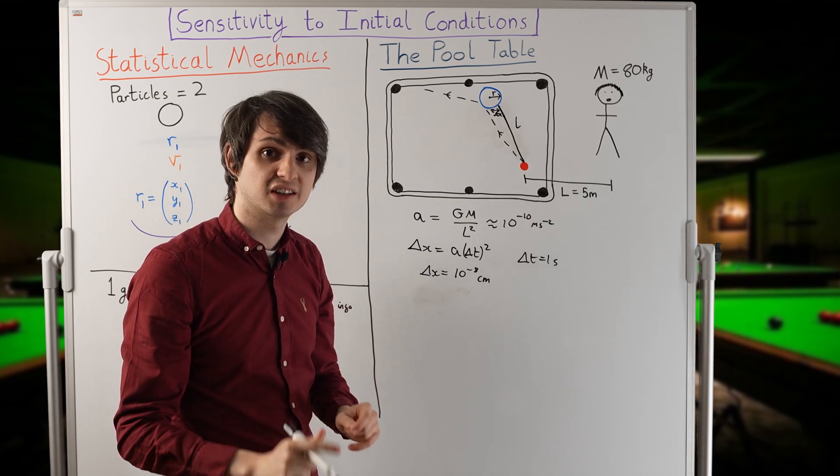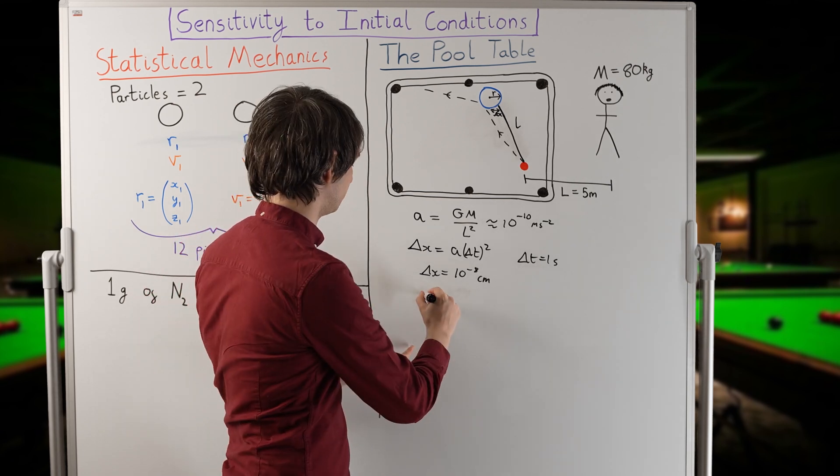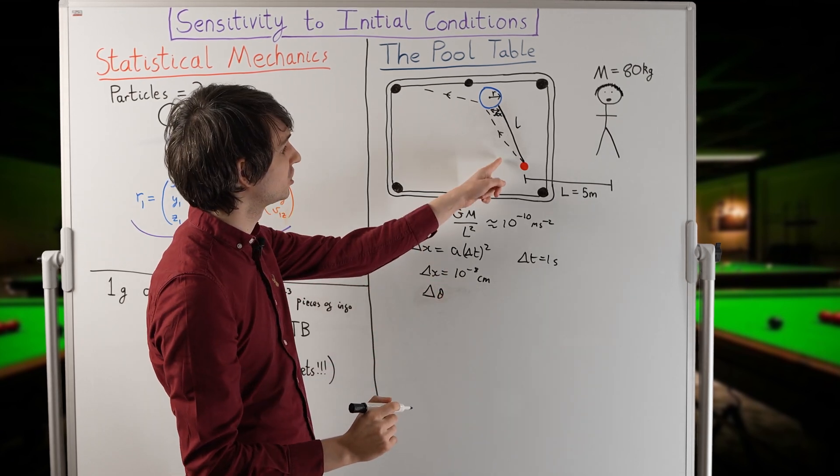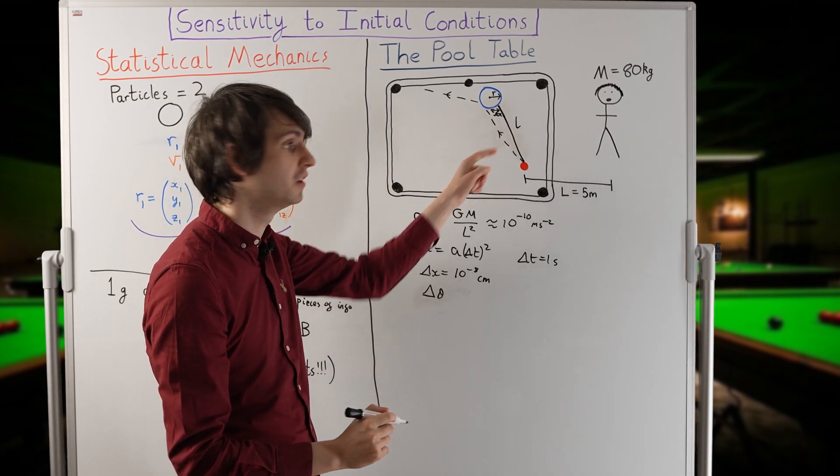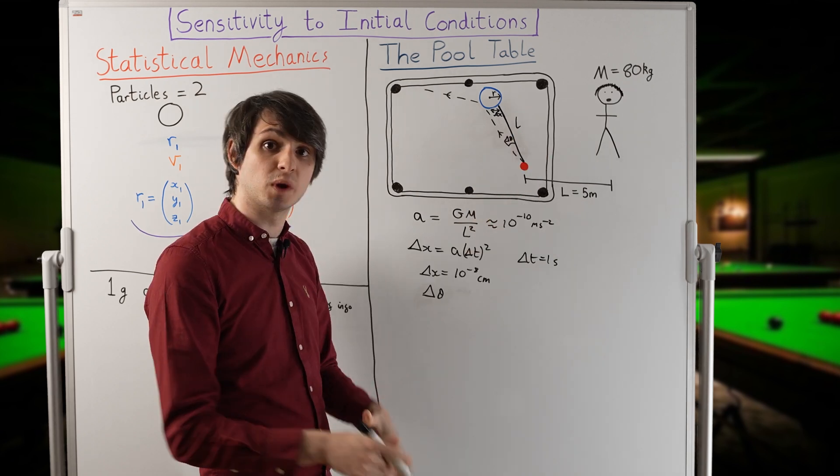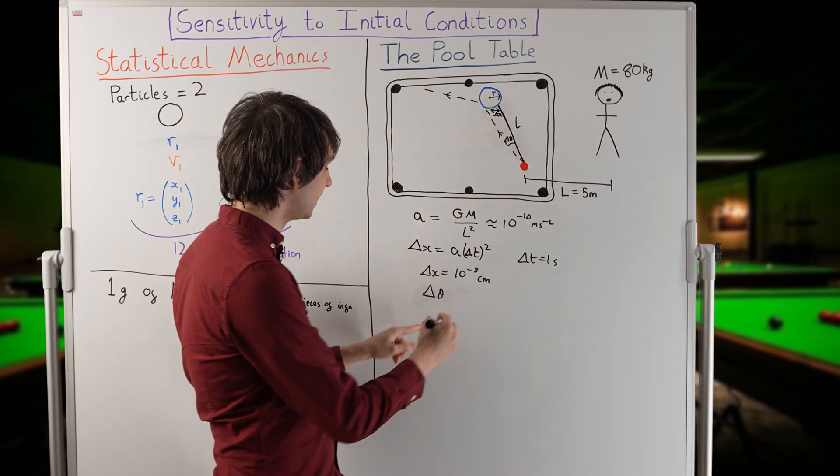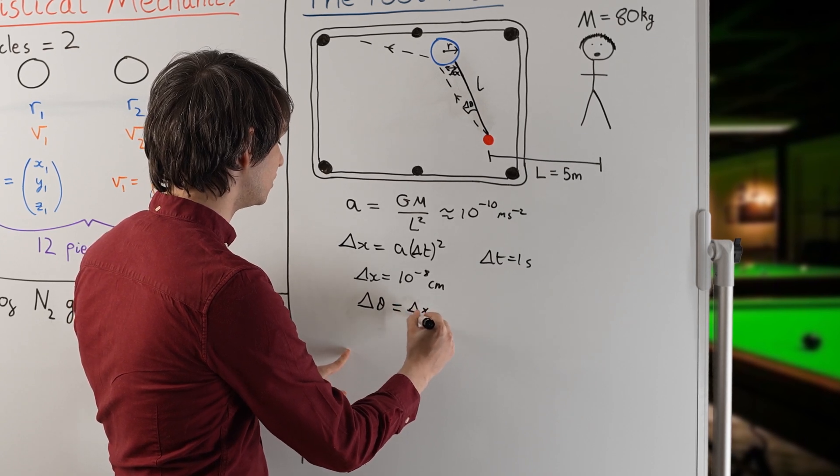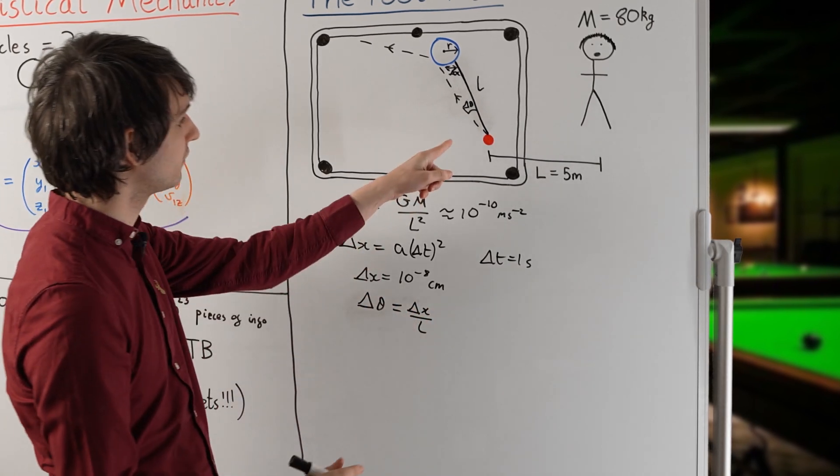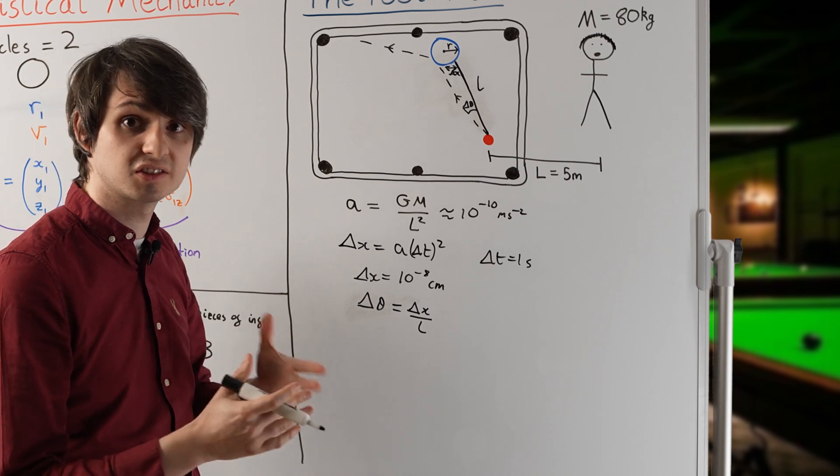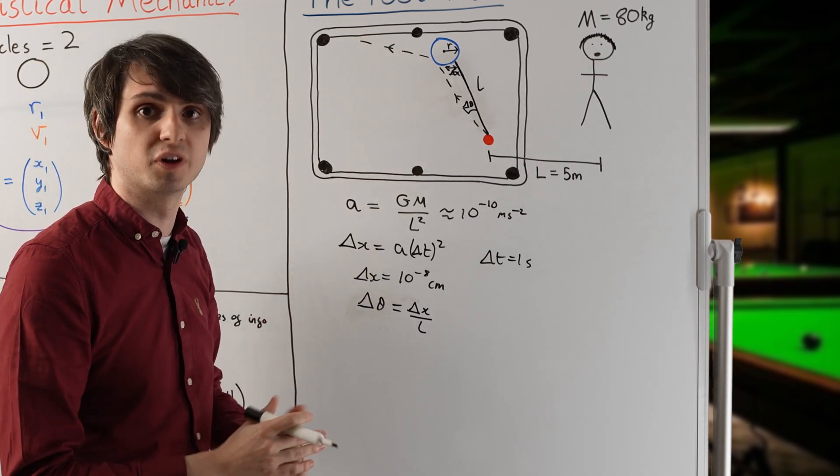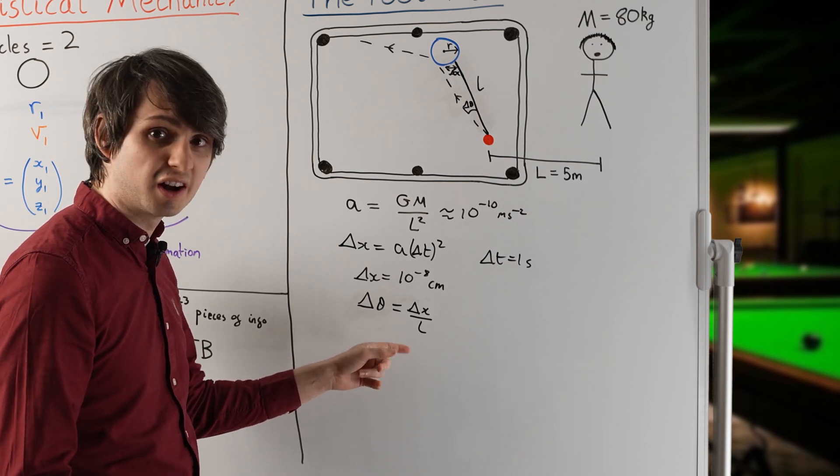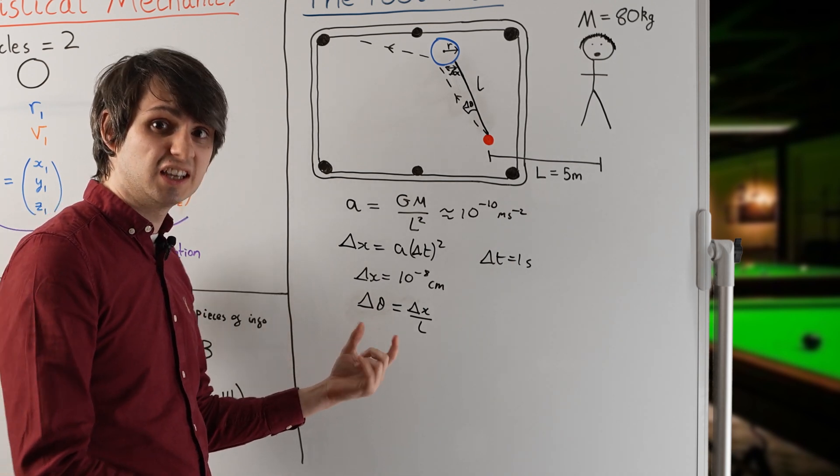Let's instead consider calculating the angular deflection of the billiard ball. This tells us how much the angle of its trajectory will have changed by. We can find the angular deflection of our ball by taking the deflection delta x and dividing it by the distance that the ball has traveled between collisions. Let's say that the ball travels 20 centimeters before it hits another ball. If we calculate this, we again find that the angular deflection is tiny.